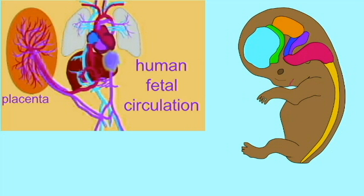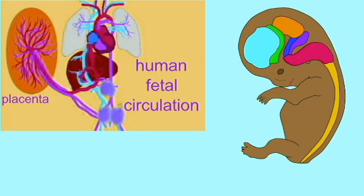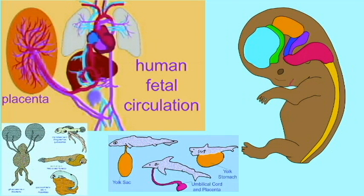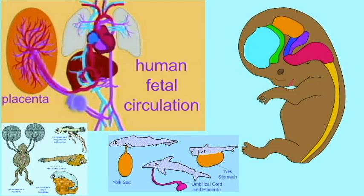Eutherian mammals are also known as placental mammals. Unfortunately, the definition of placenta is a difficult one, since if one were to refer to the interaction of maternal and fetal cells which allow for exchanges of materials, then there are a lot of fish which have placentas, and amphibians and reptiles as well.